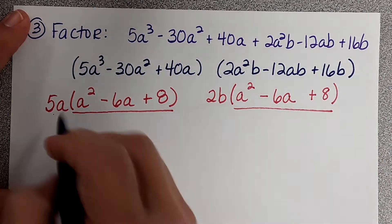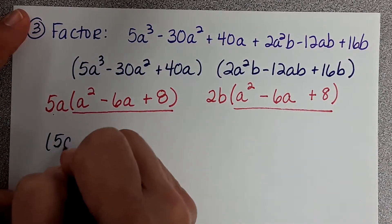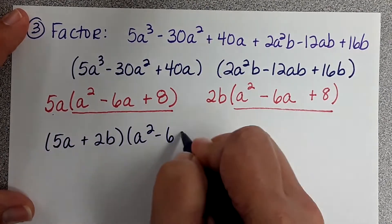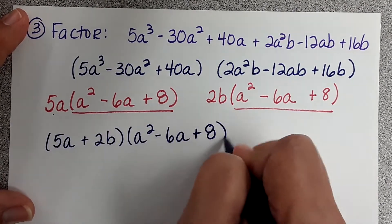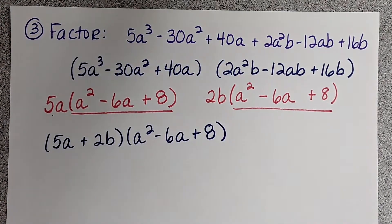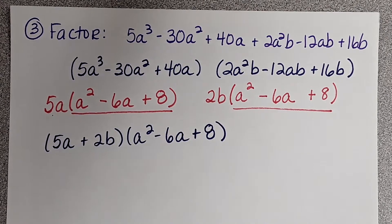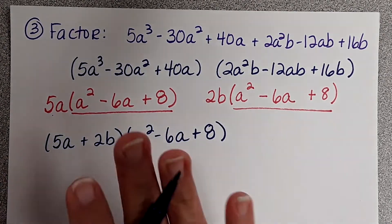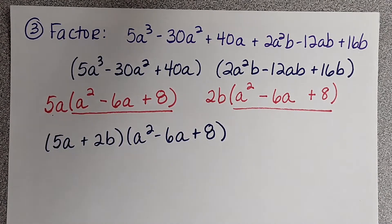So, 5A and 2B, that's my first factor. But, that's a quadratic. So, we need to see if we can factor that. We're done with 5A plus 2B. We don't need to do anything else with 5A plus 2B because that's already factored. But, let's see if we can factor A squared minus 6A plus 8.